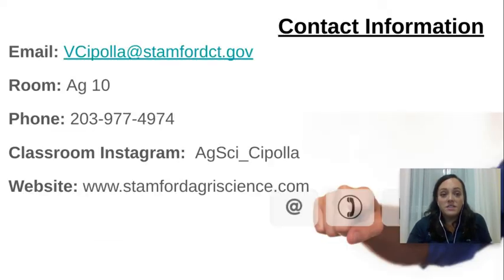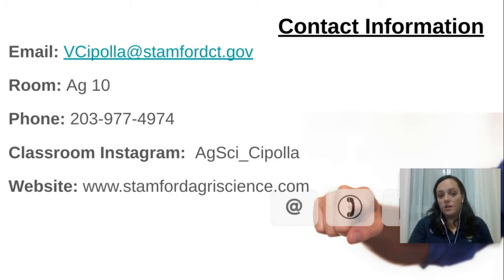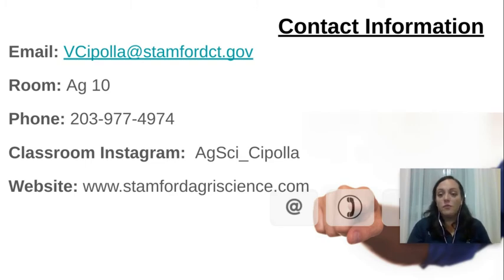My contact information — the best way to reach me is through email. My email is vsipolla@stanfordct.gov. Please feel free to reach out to me via email. You can also give us a call at the office. The number is 203-977-4974. If we don't pick up, just leave a message and we'll get back to you as soon as we can.